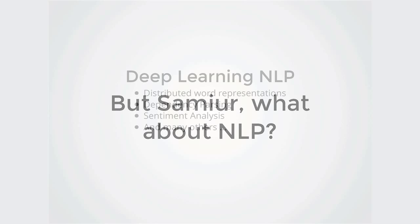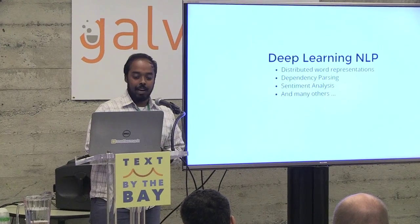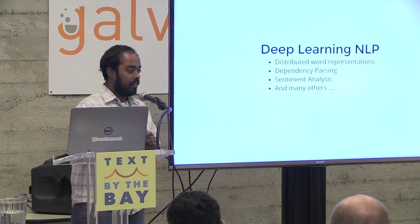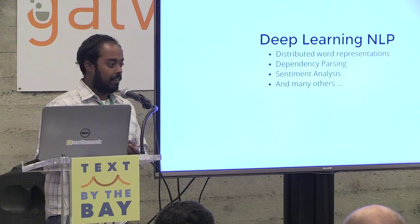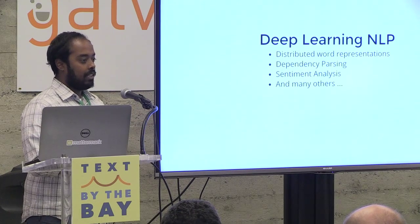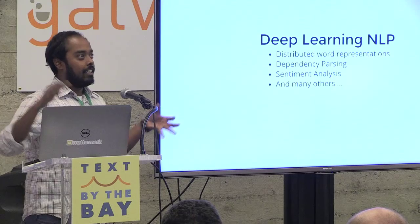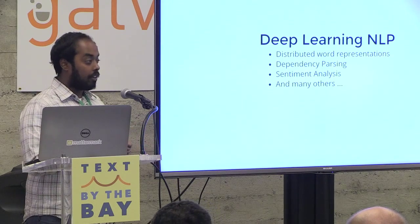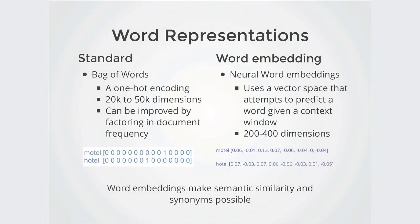What deep learning NLP has been making strides in and breaking the state of the art includes, obviously, Word2Vec — everyone's probably heard about that a hundred times by now — distributed word representations with word embeddings with Word2Vec and GloVe. Richard Socher is talking right after me, and he was part of the team that created GloVe. Then there's dependency parsing, which is taking a sentence and turning it into a grammatical tree that you can do other things with. Sentiment analysis is something pretty common too.